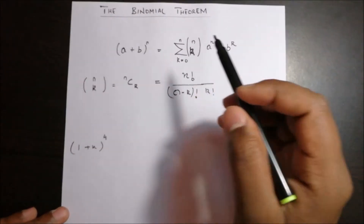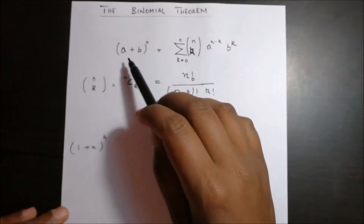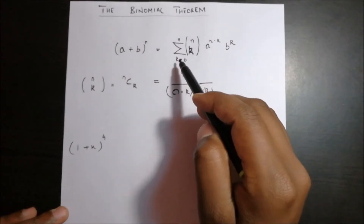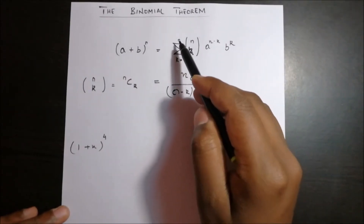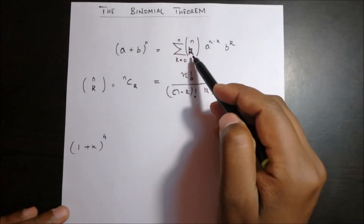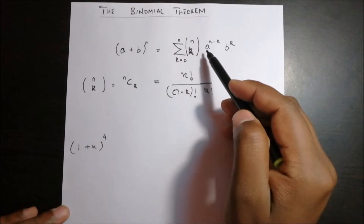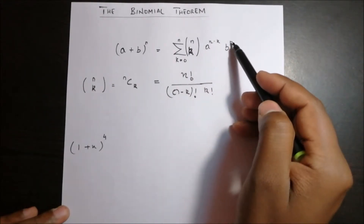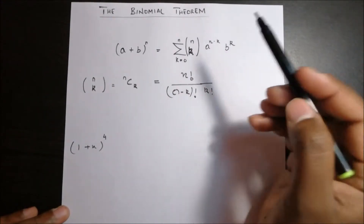So binomial theorem ka hai: (a + b) to the whole power n is equal to summation of k from 0 to n, of n-choose-k, times a to the power (n minus k), times b to the power k.